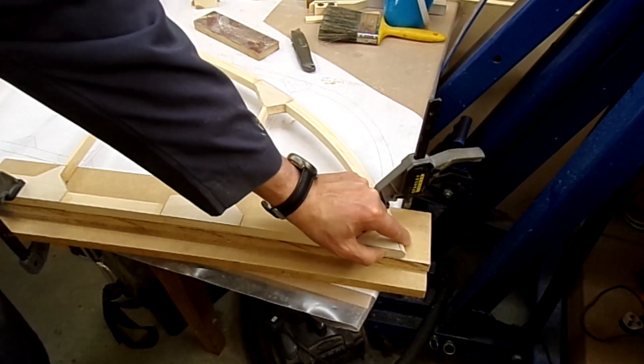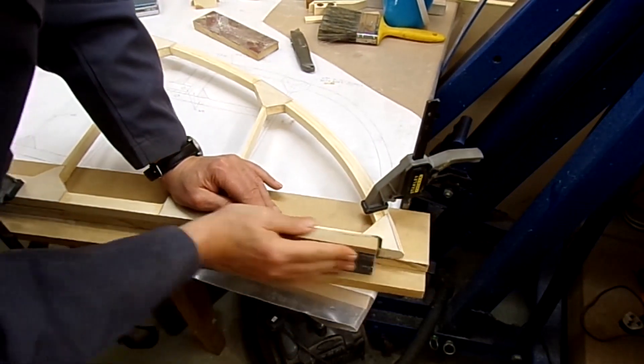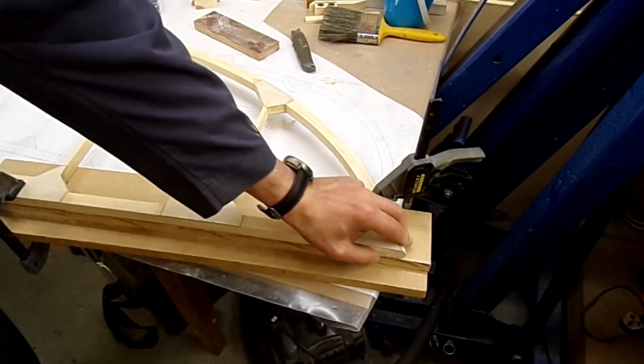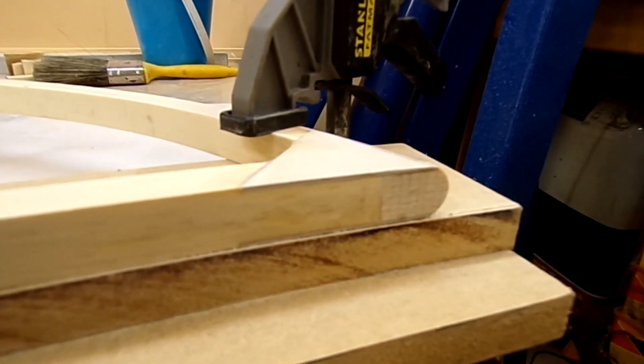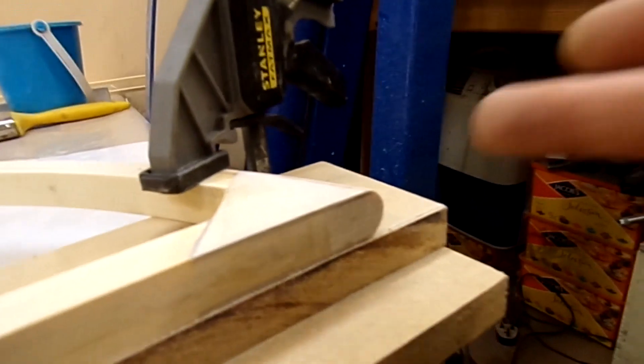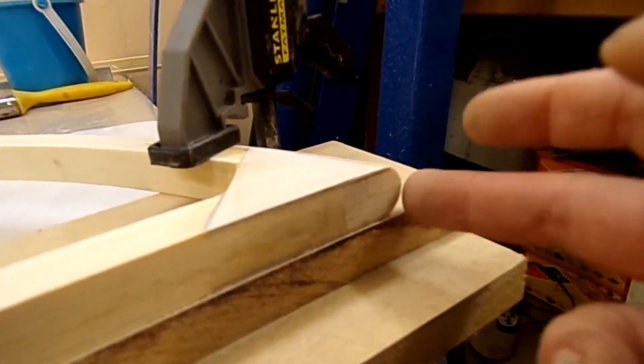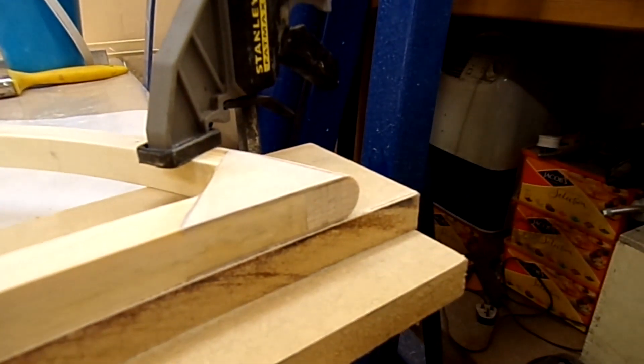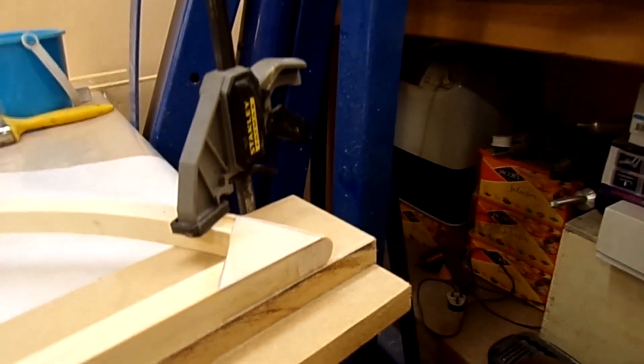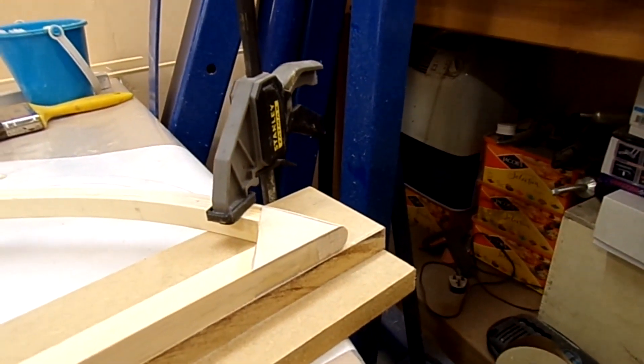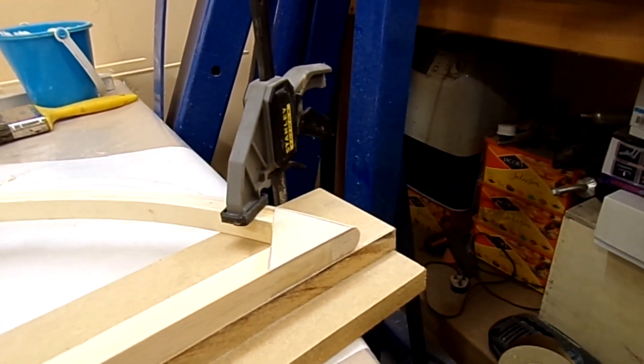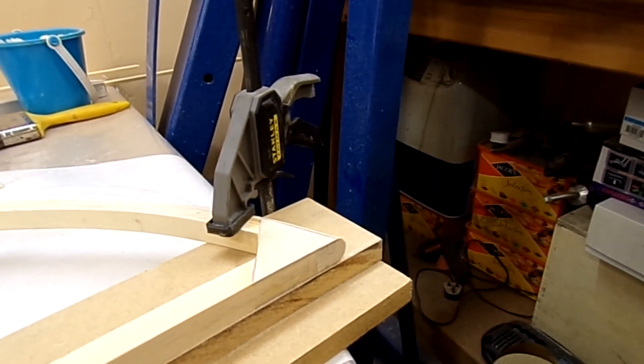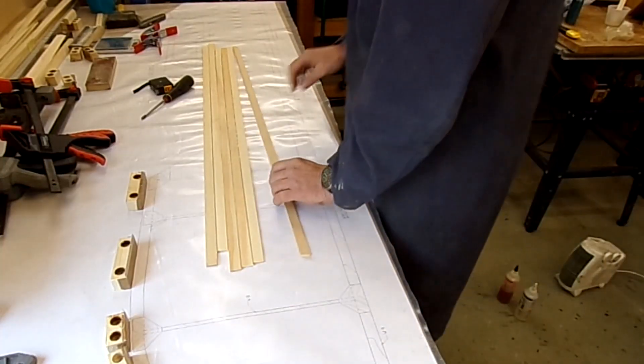That's the end of the joint. This section here will end up getting sanded a bit to match the elevators once the elevators are complete, but hopefully it shouldn't take too much. I'm expecting about maybe an eighth of an inch, maybe slightly less.